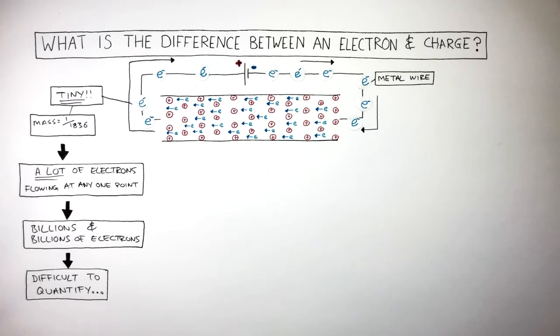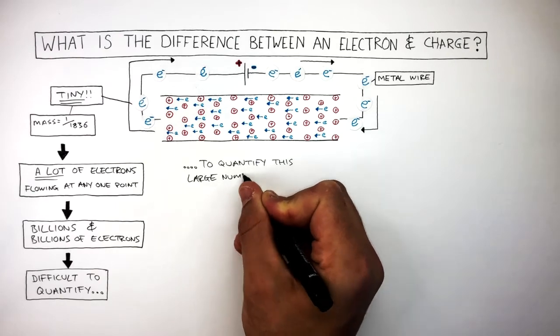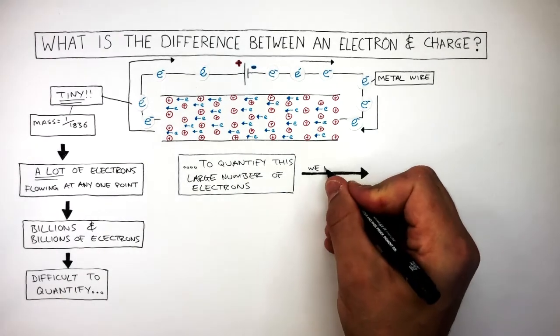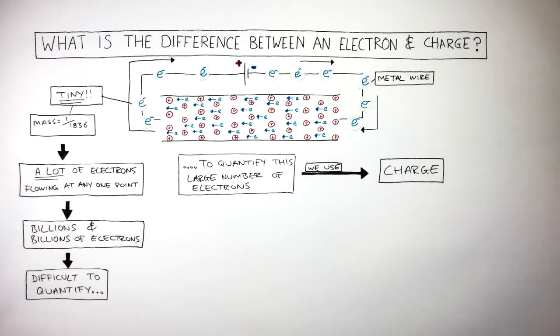So to solve this problem and to quantify this large number of electrons, we use charge. Charge is what we use to describe a very large number of electrons. That's all it is.